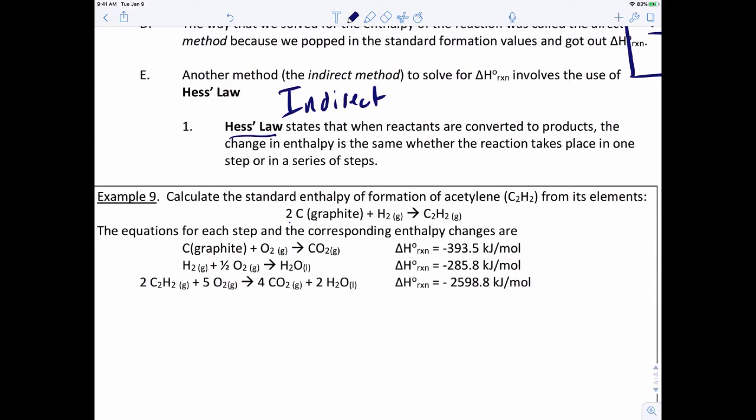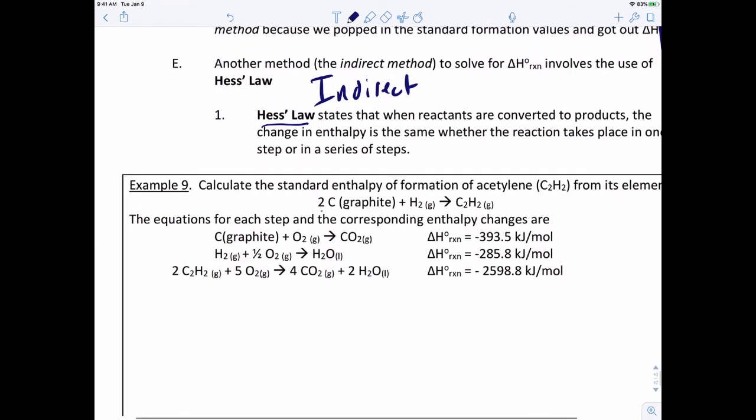But we could also use several different reactions. So let's say that this is a three step process. Here are the reactions below: carbon graphite plus O2 yields CO2, H2 plus half a mole of O2 yields H2O liquid, and two moles of acetylene plus five moles of oxygen yields four moles of CO2 plus two moles of water, each with their respective enthalpies.